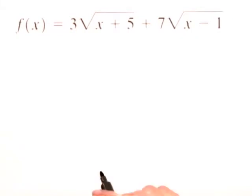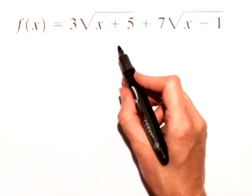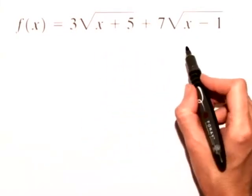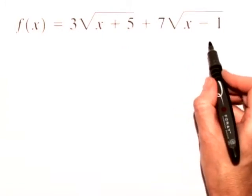For this example, we're asked to find the domain of a radical function. We have f(x) = 3√(x+5) + 7√(x-1).